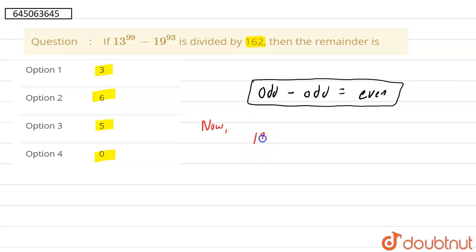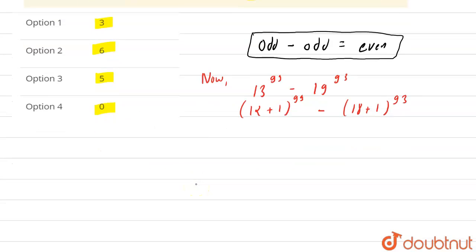Now if we write our equation, this is 13 power 99 minus 19 power 93. This can also be written as (12 plus 1) power 99 minus (18 plus 1) power 93. Now we also know the formula that (a plus b) power n can be written as sigma n C r a to the power (n minus r) b to the power r.